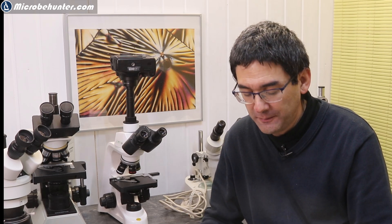He mentioned there's some electronic problems and in any case he wants to upgrade. He's thinking of upgrading to a Swift Stellar 1 with achromatic objectives because achromatic objectives give more opportunities to change to 20x and 60x. But he has a question: How can the LED bulb be changed in case it dies? Is there any way to fix this in the future? And how easy is it to find this weird kind of connector in case it fails?